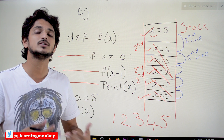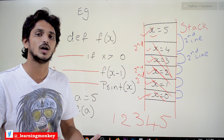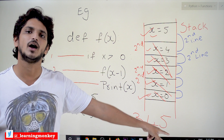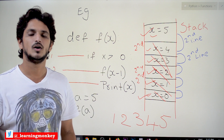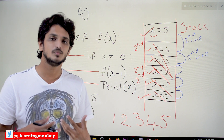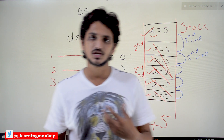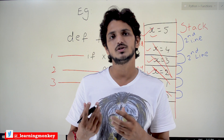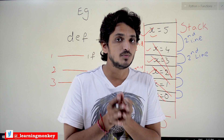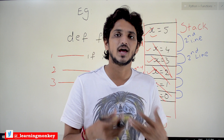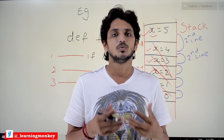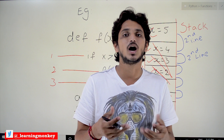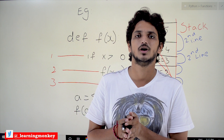This is how recursive functions execute. The output of this program is 1, 2, 3, 4, 5. We will do a more complex example in our next class. Please watch this video again and again until you get clarity about how recursive functions execute.